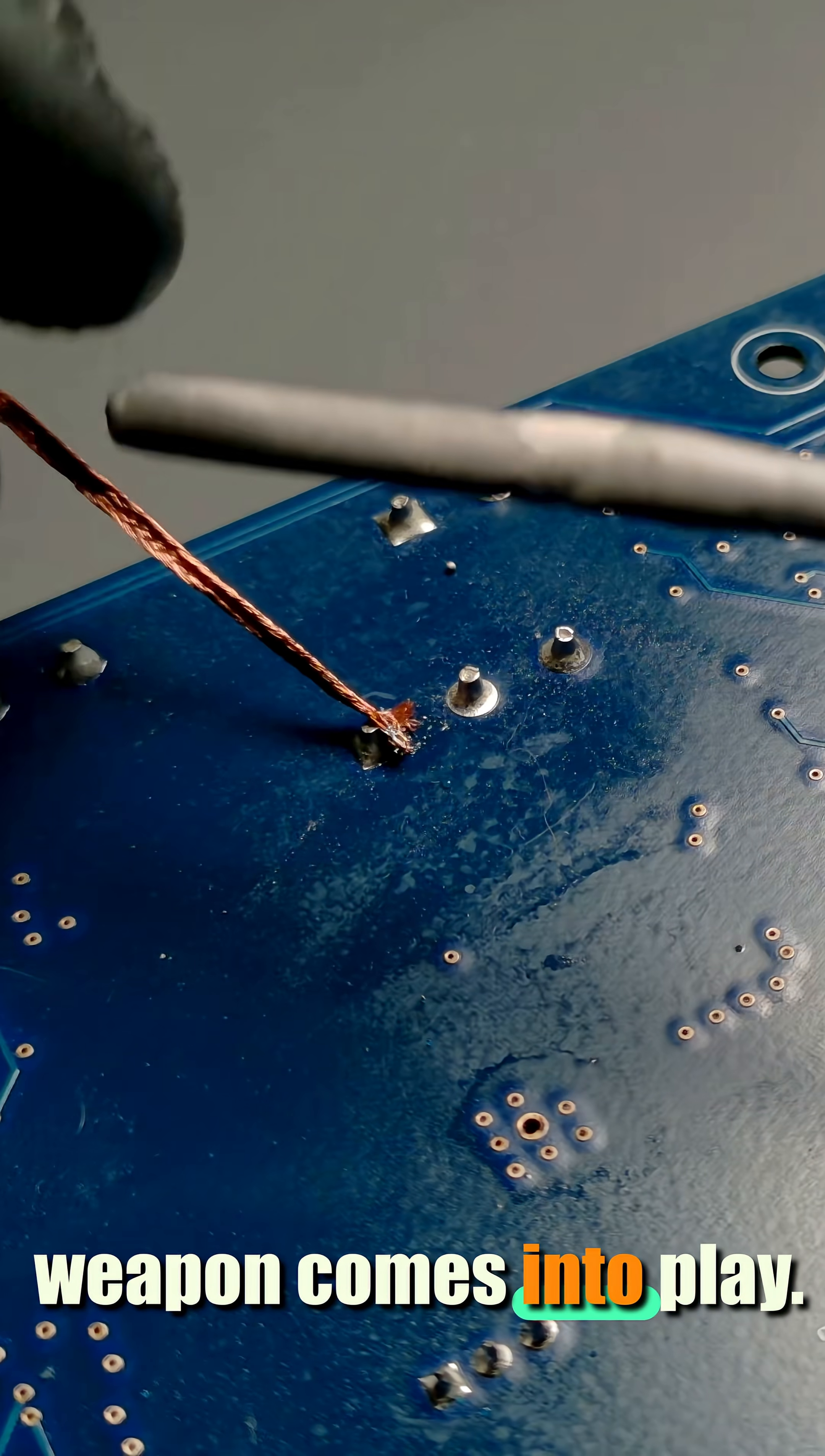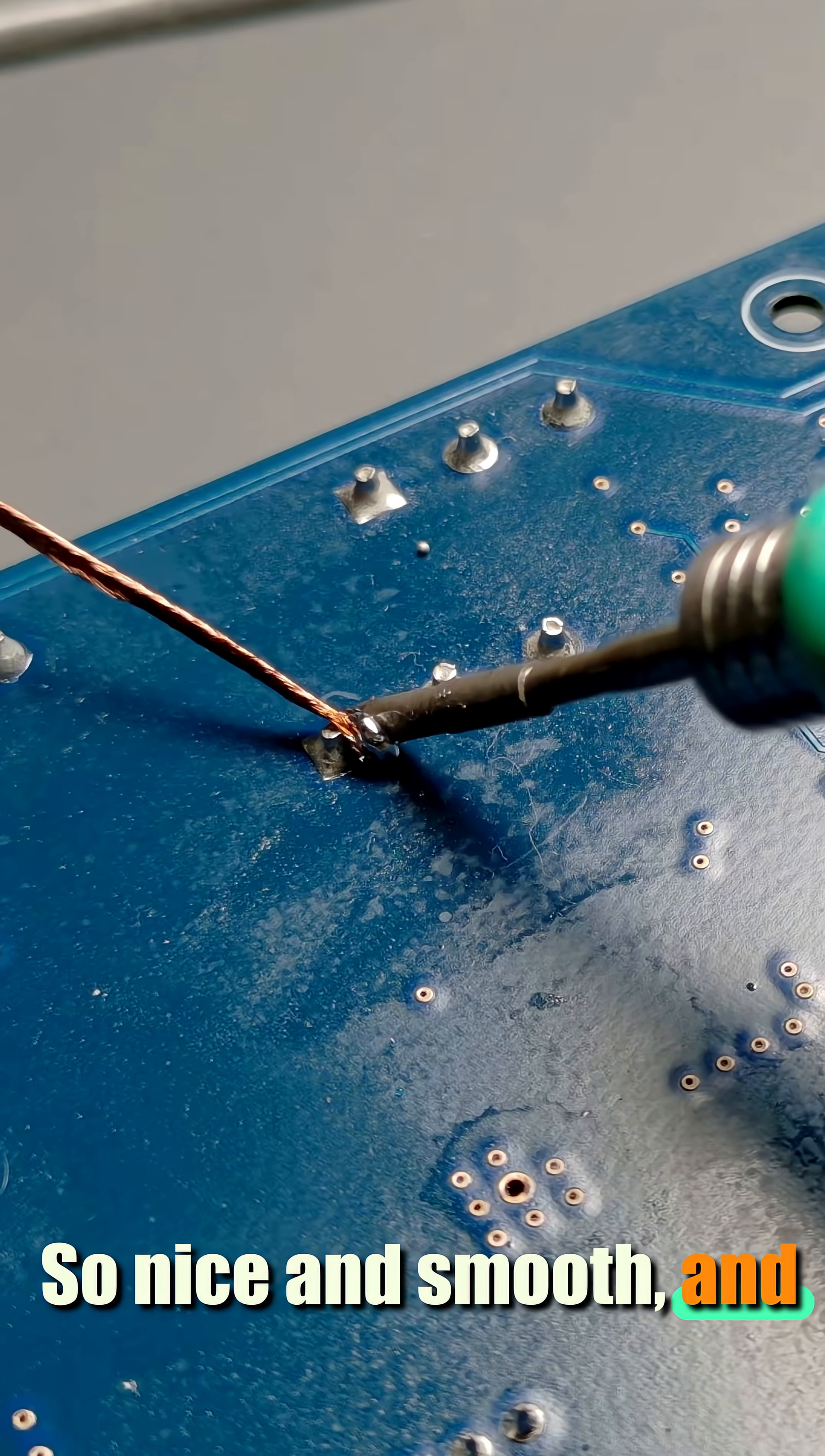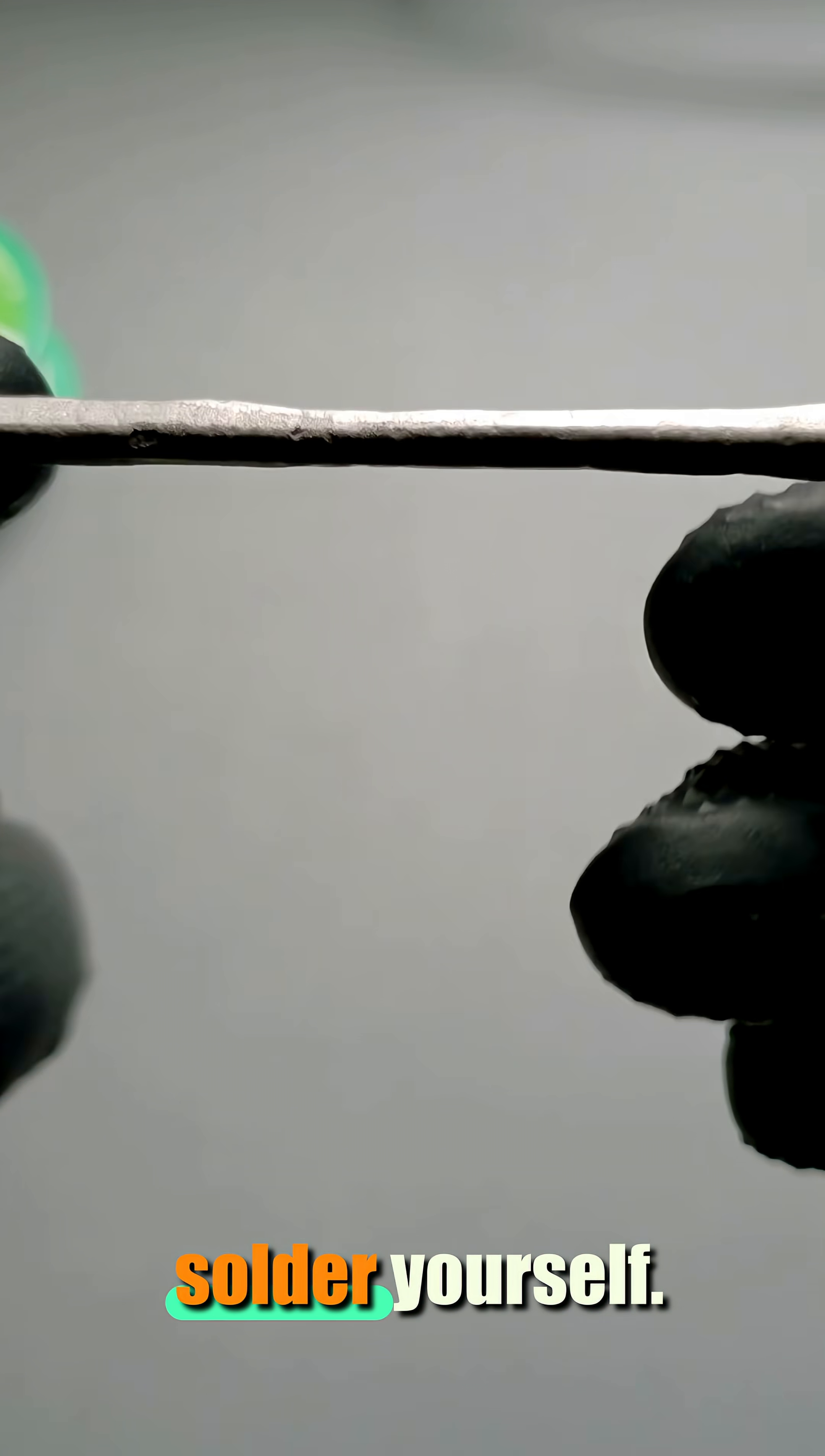But now my secret weapon comes into play. Magic solder. Check this out, see how the old solder just bonds with mine. So nice and smooth, and boom, the desoldering braid just soaks that stuff up like a sponge. Crazy, right? Look how saturated the braid is now. And the best part, I'm gonna show you how to make this magic solder yourself.